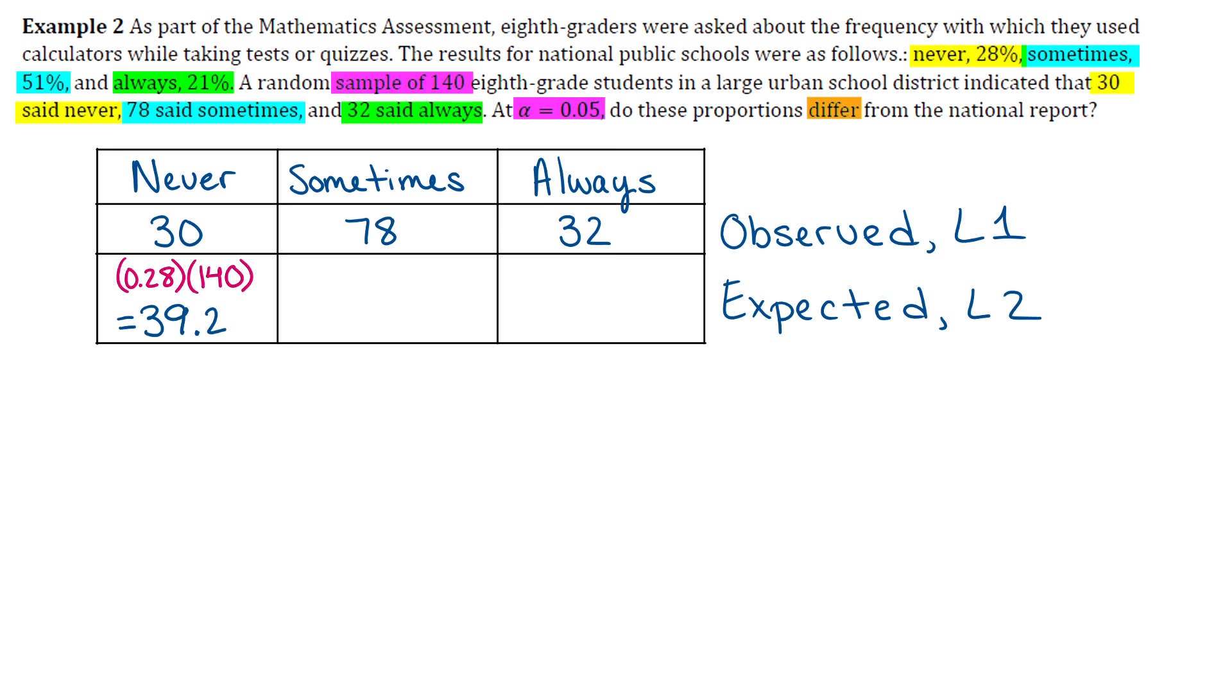And then we'll do the same thing for the other categories. So for the national public schools, it says that 51% say sometimes. So what would we expect as far as that sample? Well, we would expect that 51% of 140 would have said sometimes. So we'll do 0.51 times 140. That gives us 71.4.